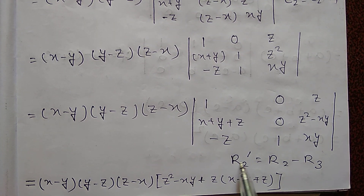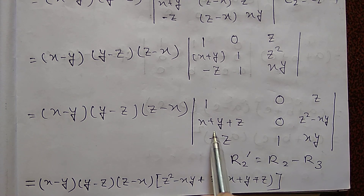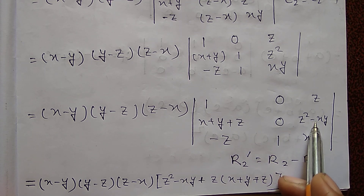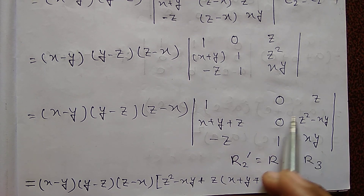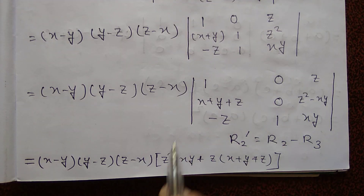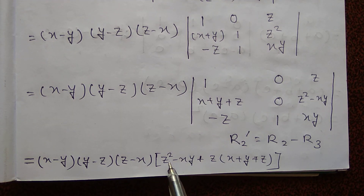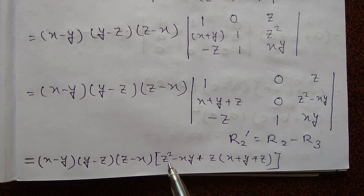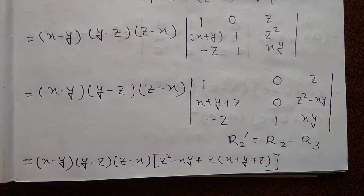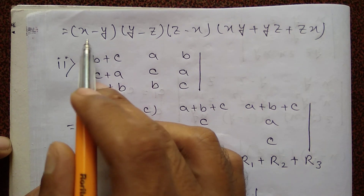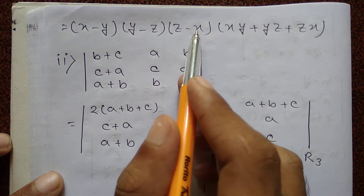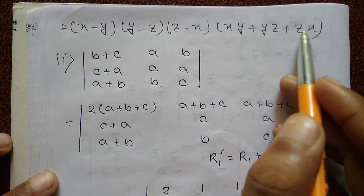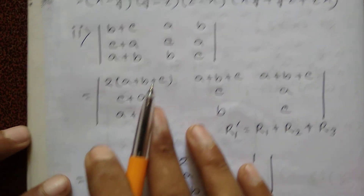Row operation R2 prime equal to R2 minus R3. R2 prime equals x plus y plus z, 0, z squared minus xy. The determinant value equals z squared minus xy plus z into x plus y plus z. The final answer is x minus y, times y minus z, times z minus x, times xy plus yz plus zx.